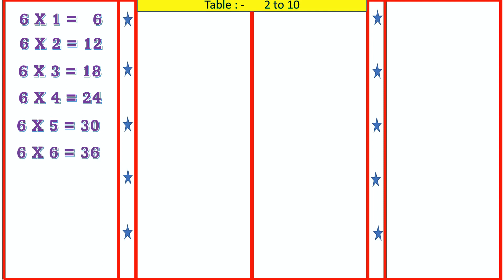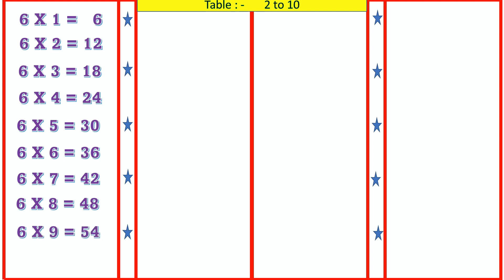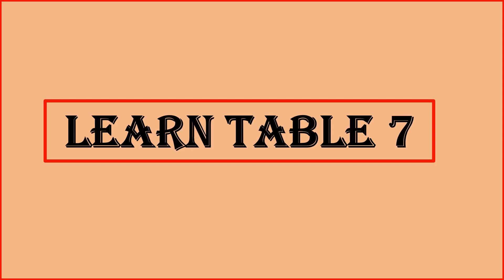6 7's are 42, 6 8's are 48, 6 9's are 54, 6 10's are 60. Learn table 7.